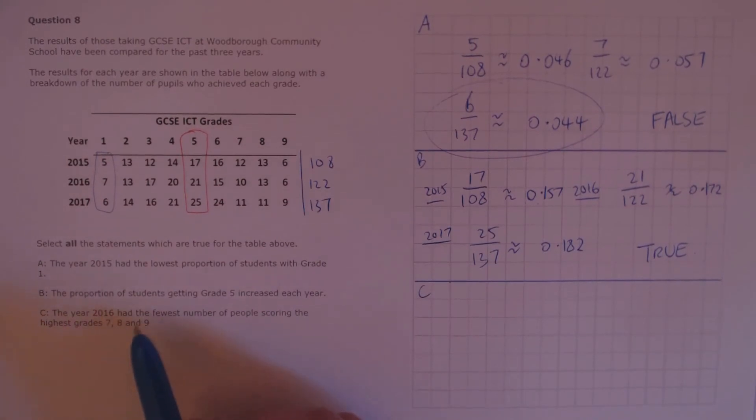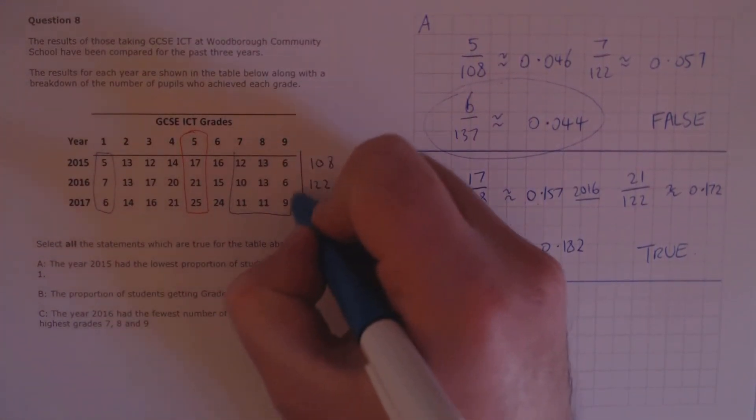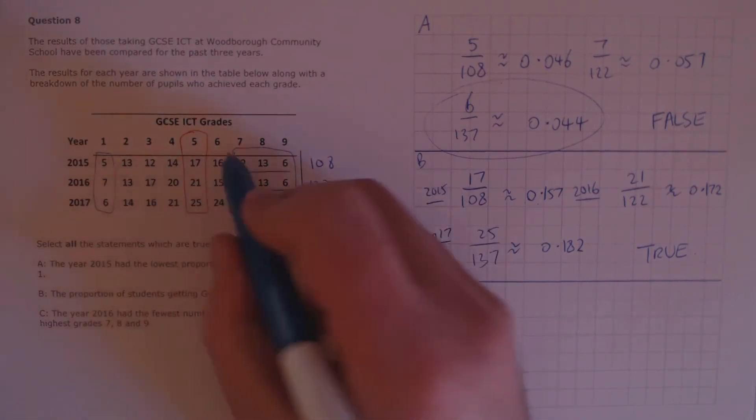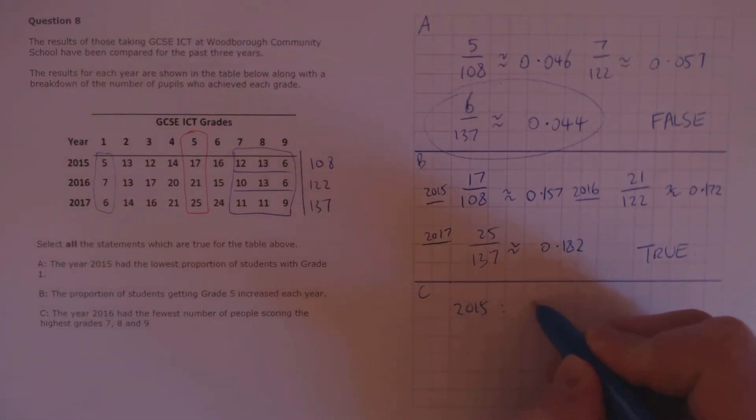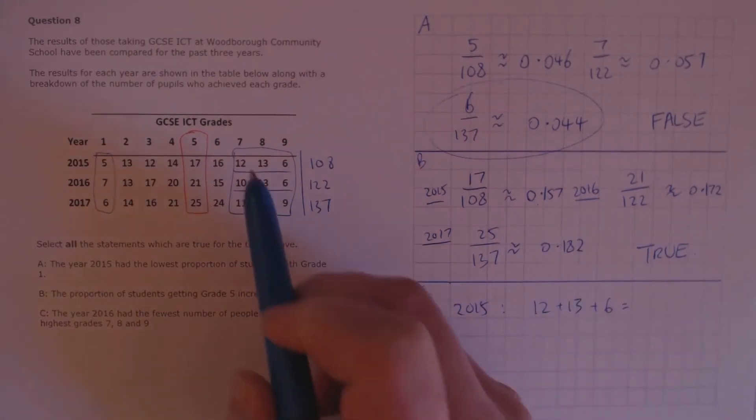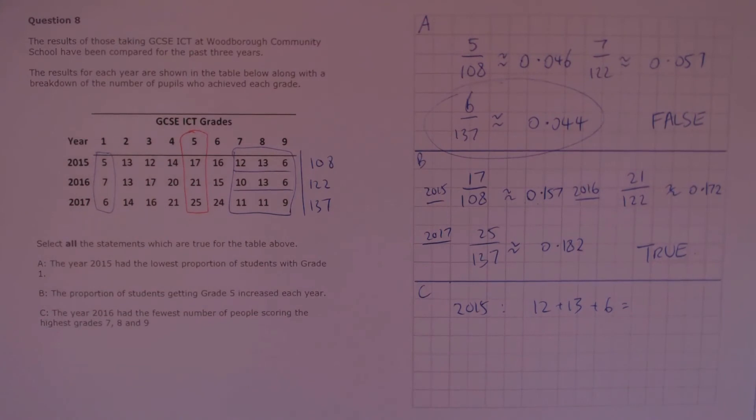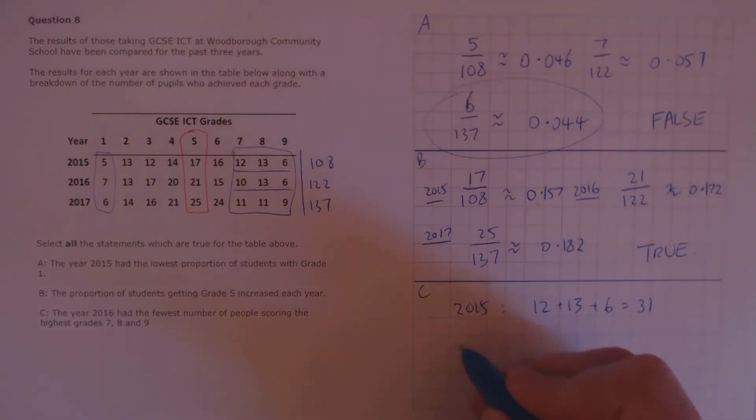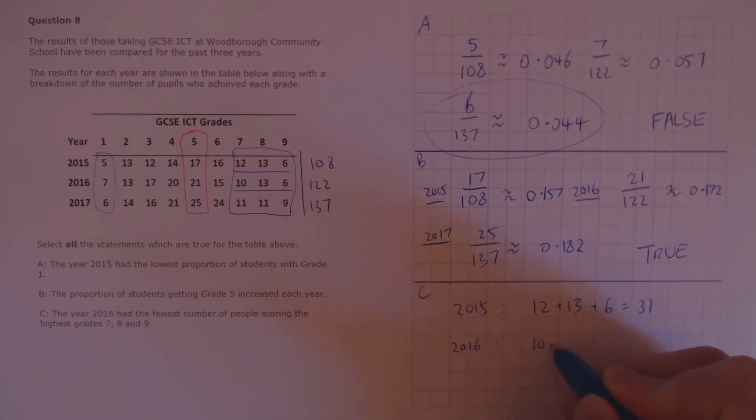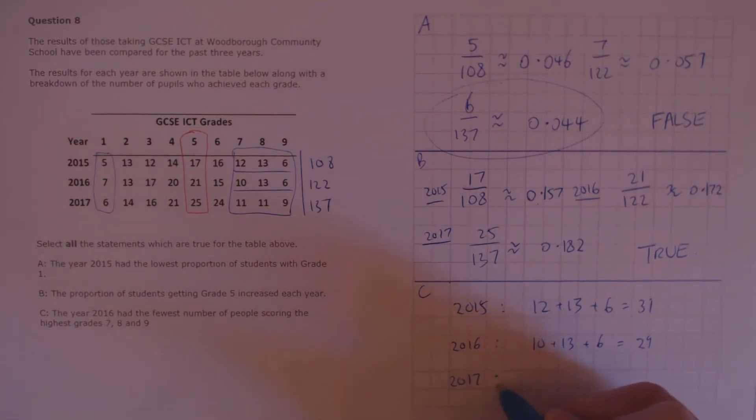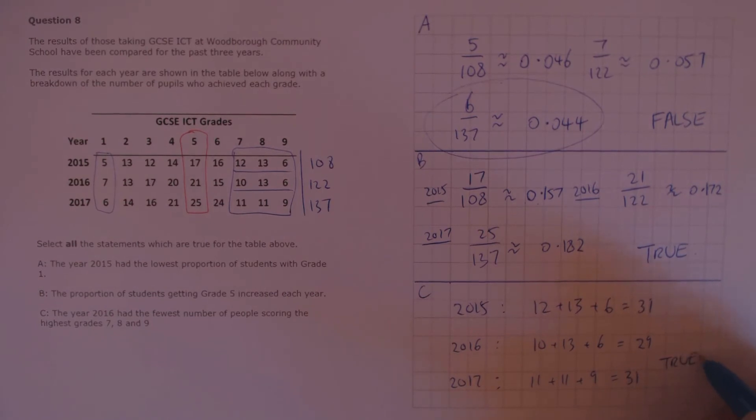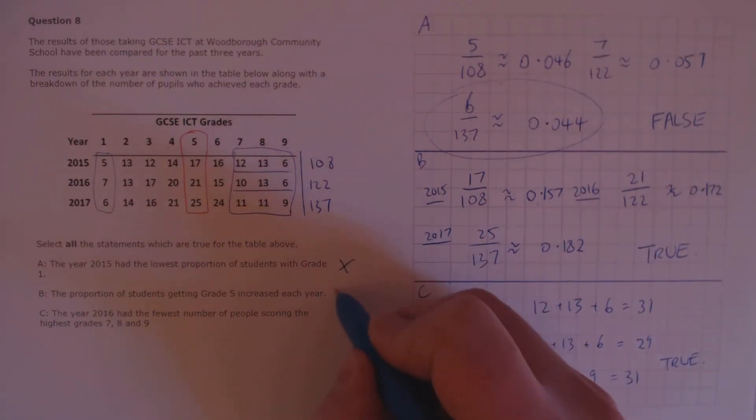C. The year 2016 had the highest grades 7, 8, and 9. So, let's calculate that. We're looking at this area of the table now. In 2015, we had 12 plus 13 plus 6 people scoring the grades 7, 8, and 9. That gives us a total of 31 students in 2015. In 2016, we have 10 plus 13 plus 6, which is a total of 29. And in 2017, we have a total of 11 plus 11 plus 9, which is 31. So, 2016 having the fewest is true. Finally, that means our answers are false, true, and true.